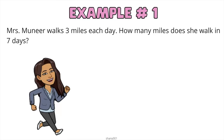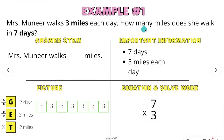Let's look at example number one. Mrs. Muneer walks three miles each day. How many miles does she walk in seven days? Again, to start off, we will go ahead and make our problem-solving model. Let's read the question: How many miles does she walk in seven days? Our answer stem is, Mrs. Muneer walks blank miles. Our important information is, there are seven days and she walks three miles each day.